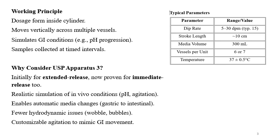Although USP1 and USP2 apparatus are widely used, USP3 was initially developed for extended release formulations and is now also used for immediate release formulations. Advantages include realistic simulation of GI conditions like pH agitation from peristaltic movement. It enables automatic media changes from gastric to intestinal, has fewer hydrodynamic issues like coning and bubbles, and can be customized to mimic GI movement.